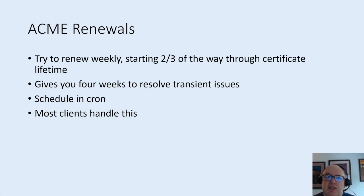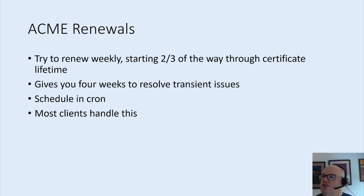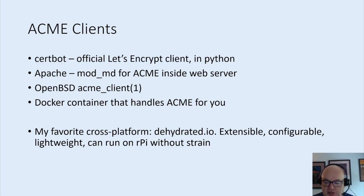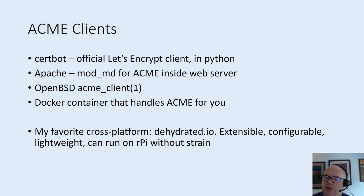Renew these certs about two-thirds of the way through the lifetime — this gives you four weeks to resolve any transient issues. You can schedule it in cron to run weekly and most clients handle this just fine. There are a bunch of ACME clients out there. One of my favorites is OpenBSD's — it's clean, it's simple, it just works, though it's also hooked in with LibreSSL making it a little difficult to get across some other Unixes. My favorite cross-platform one is dehydrated, and it's simple enough it runs on a Raspberry Pi without trouble.